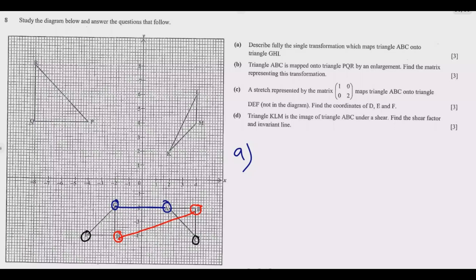For rotation, we need to find the center of rotation. Draw a perpendicular bisector to each of the lines joining corresponding points — you can pick any two pairs. The point of intersection of the perpendicular bisectors is the center of rotation. For the blue line, the perpendicular passes through the origin. Using the protractor to bisect the red line, we find the perpendicular also passes through the origin.